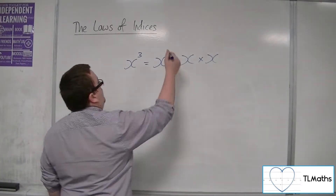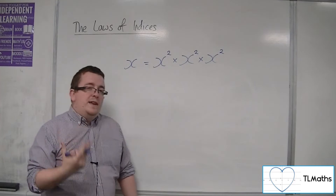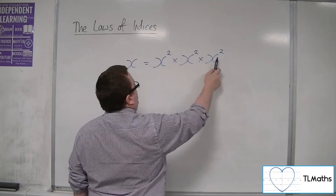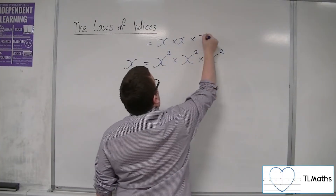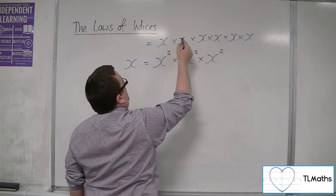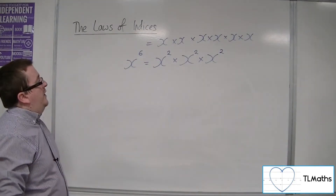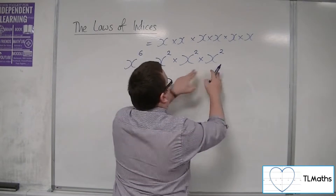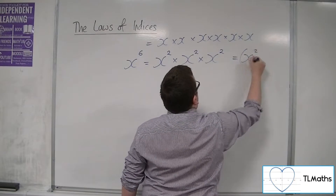If I put these in as x squareds, well now I've got two different things. I've got x squared times x squared times x squared, which means x times x, times x times x, times x times x. So really I've got 1, 2, 3, 4, 5, 6 x's there multiplied by each other. So this is really x to the 6. But clearly this is also x squared multiplied by itself three times — so this is x squared, cubed.